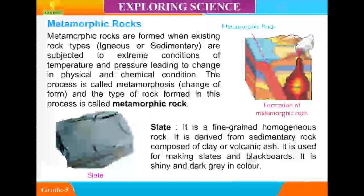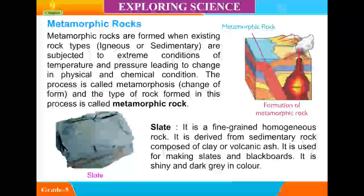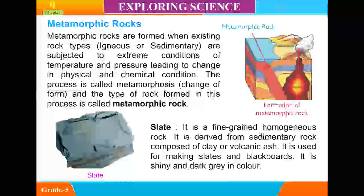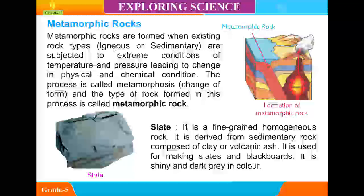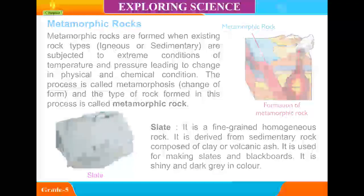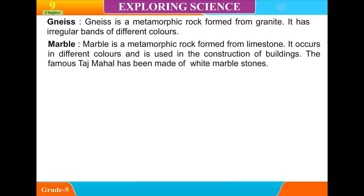Slate. It is a fine-grained homogeneous rock derived from sedimentary rock composed of clay or volcanic ash. It is used for making slates and blackboards. It is shiny and dark gray in color. Gneiss. Gneiss is a metamorphic rock formed from granite. It has irregular bands of different colors.